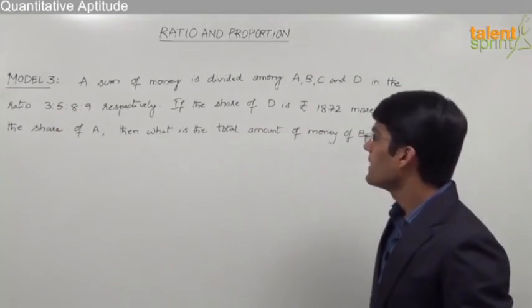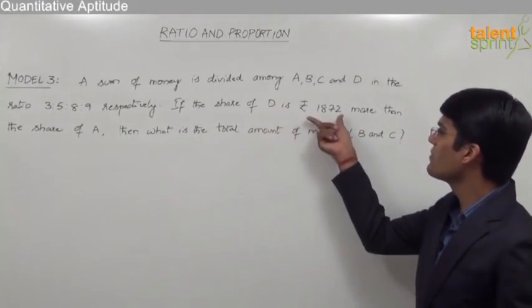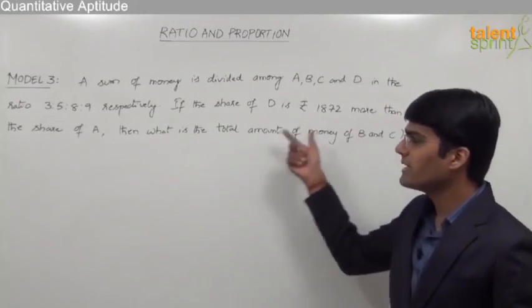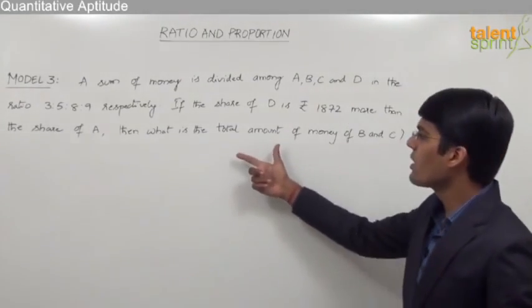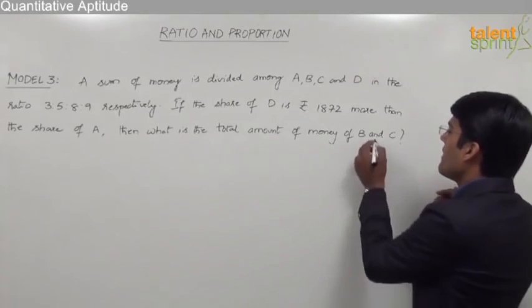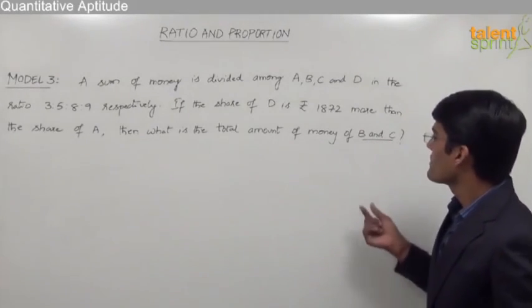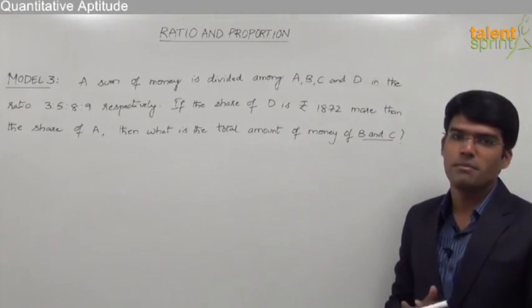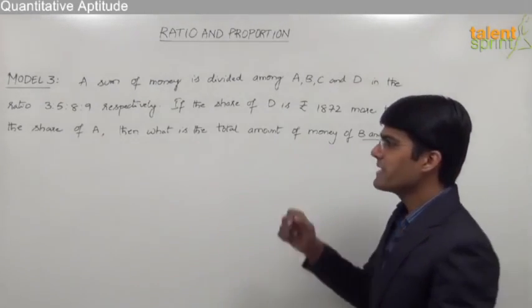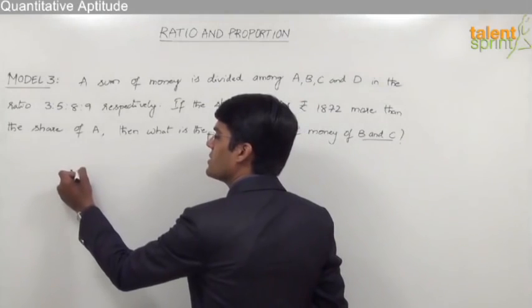If the share of D is rupees 1872 more than the share of A, then what is the total amount of money of B and C? So here from the given data, we are supposed to find out the total amount with B and C together.